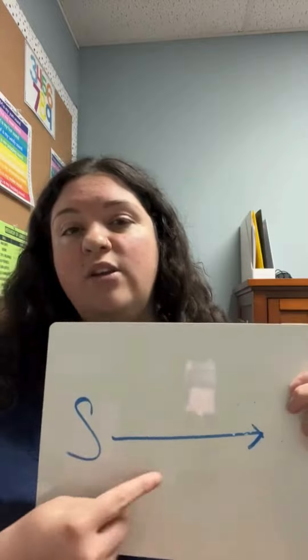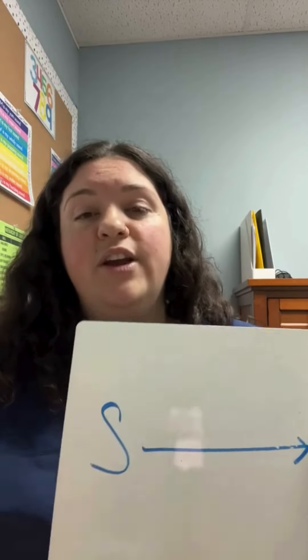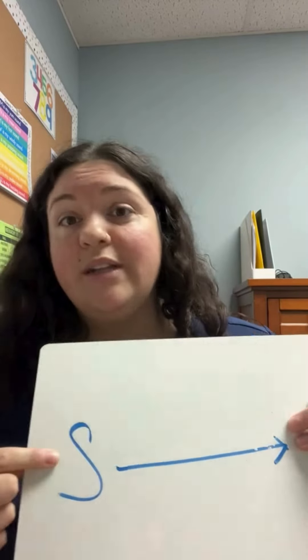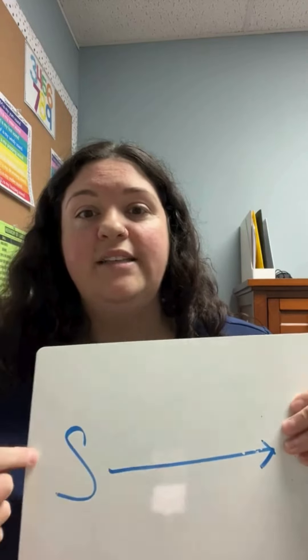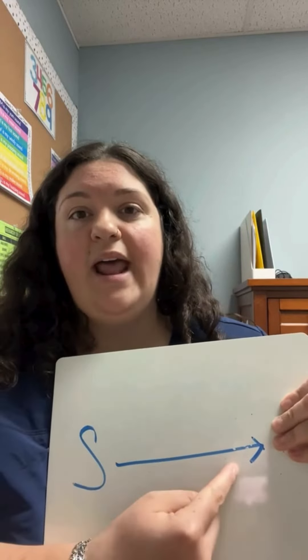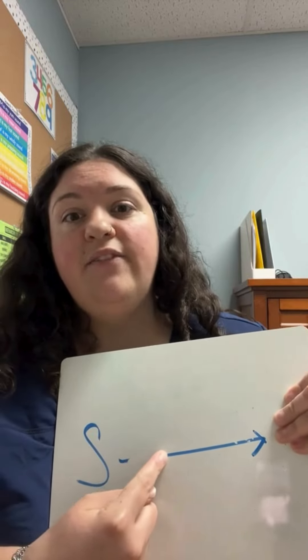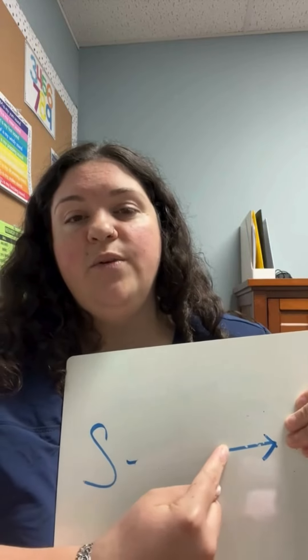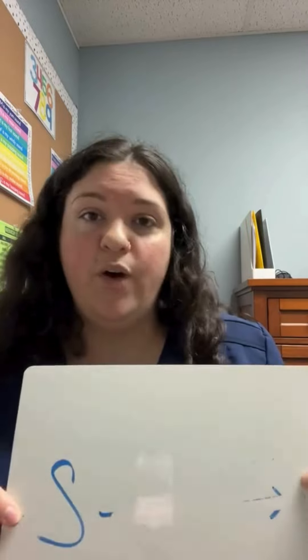Another activity that I love to use it for is articulation trials. You draw your S and then you draw an arrow. Then you have your child or client say their S sound, and this helps them prolong that S sound. You have them take their finger and erase it while they're saying that S sound, allowing for that visual feedback.